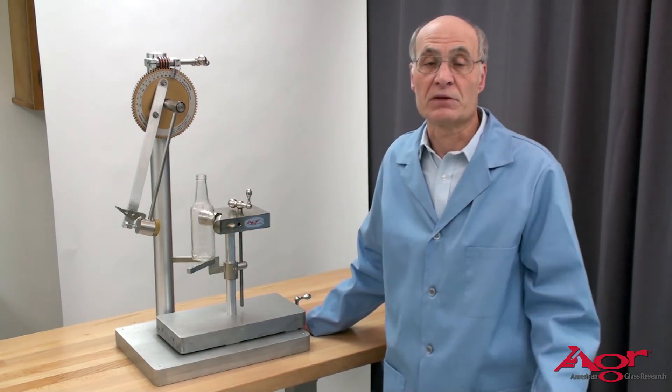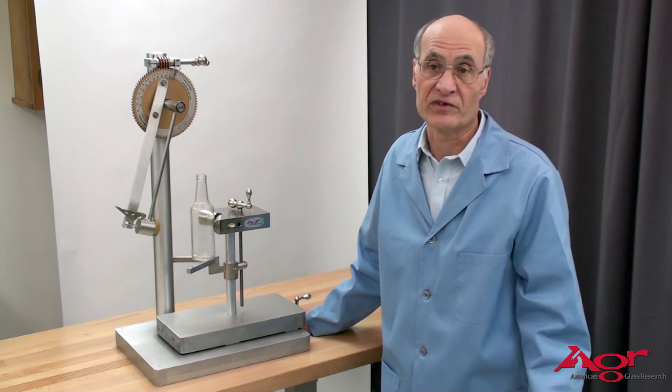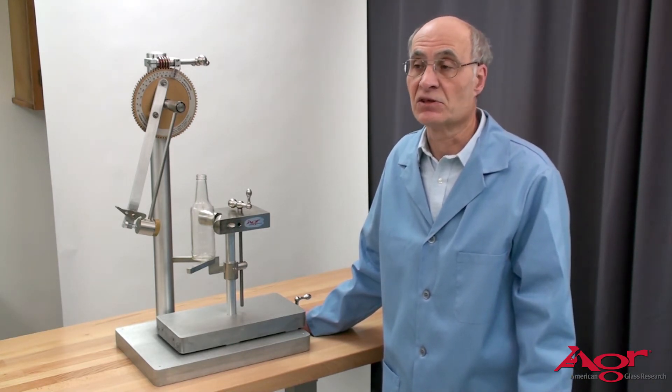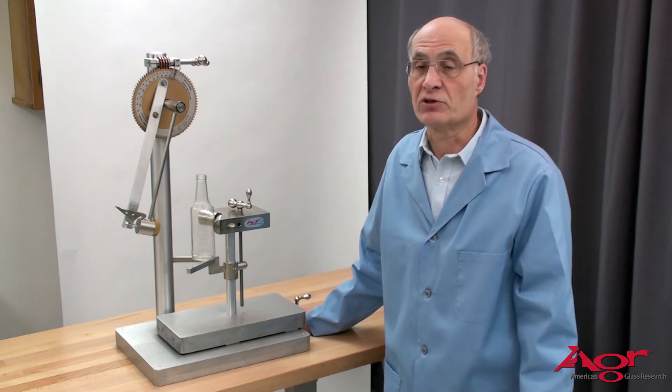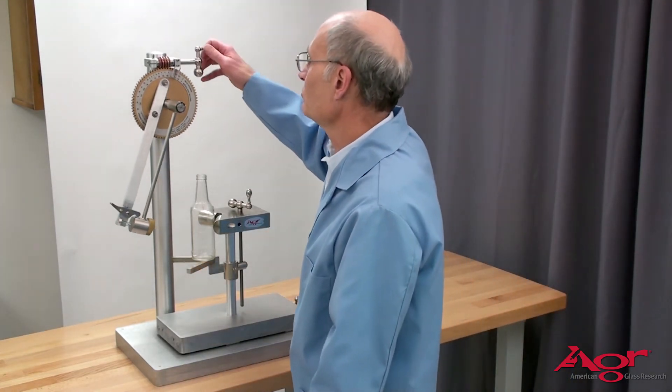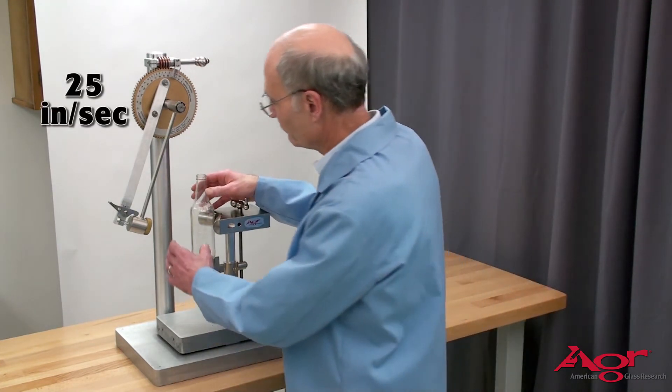Now the type of impact test you can do a progressive test which means you start at a low level and build up until it fails or you can do a one shot deal which would be like a pass test. For most of our testing here we're going to do a progressive test just to demonstrate it. So I have the bottle positioned. We'll start at a level of 25 inches per second which should be well below the breaking level.